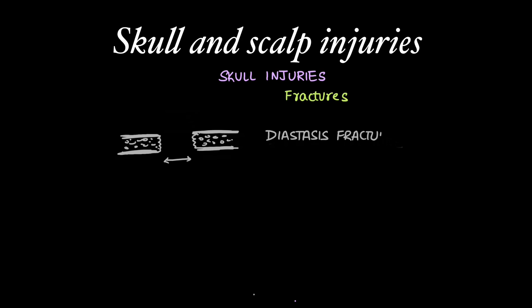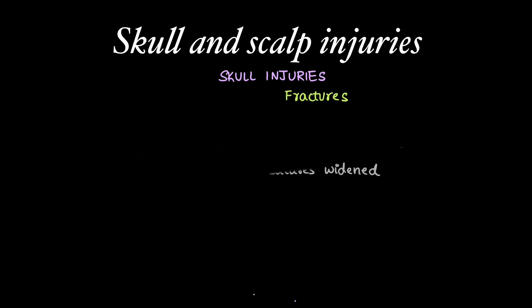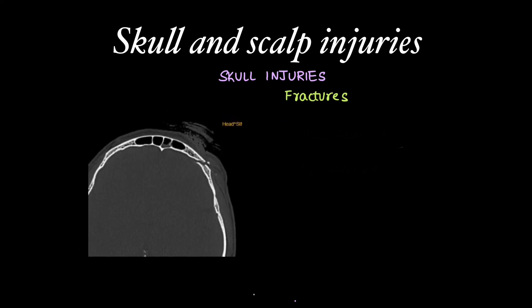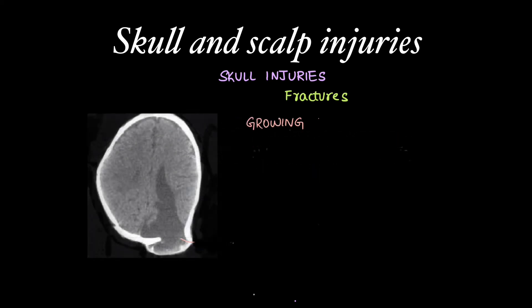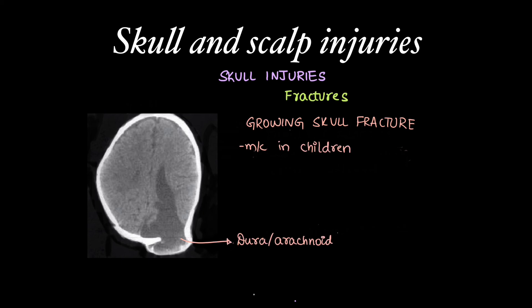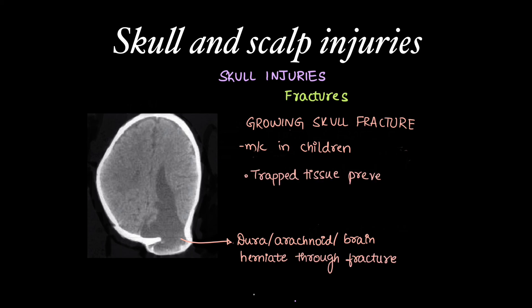A diastatic fracture involves the suture and causes sutural widening. Here is an example of an elevated fracture where the fracture fragment is displaced outside the skull, associated with scalp laceration. Growing skull fractures are most commonly seen in children, where the dura, arachnoid, or brain parenchyma can herniate through the fracture site, and these herniated or trapped tissues further prevent the healing of the fracture.